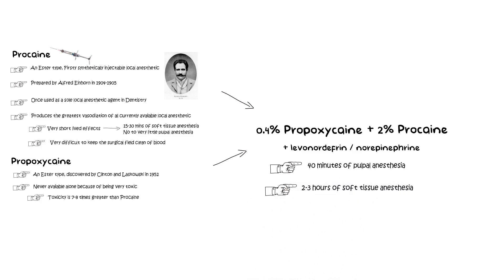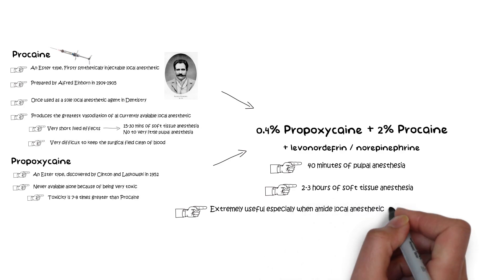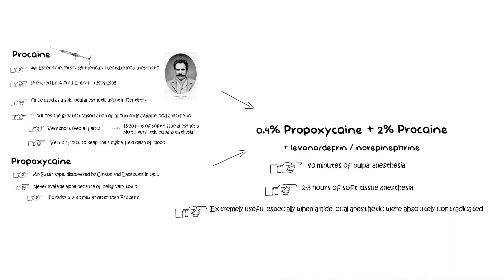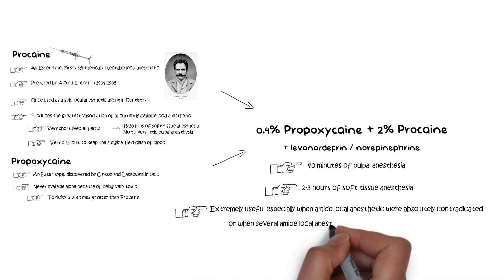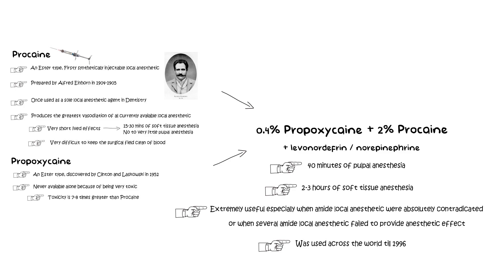The solution provided a more rapid onset and more profound and longer lasting anesthetic effect as opposed to using procaine alone. This procaine and propoxicaine combination was very useful especially when amide local anesthetics were absolutely contraindicated, such as in cases of amide allergy or when several amide local anesthetics failed to provide clinically adequate anesthesia. Until its removal from the U.S. market in 1996, this combination was the only ester local anesthetic available in dental cartridges and hence provided a viable alternative to the amide local anesthetics.